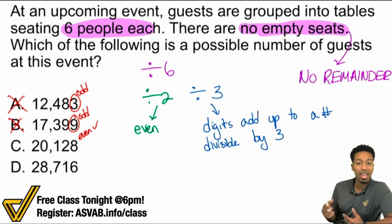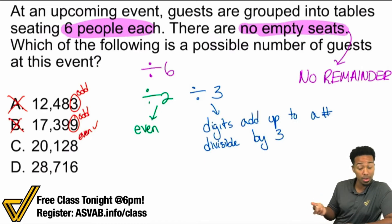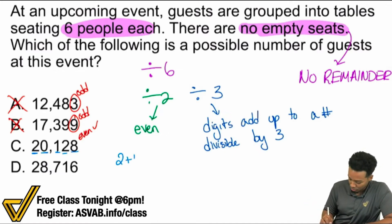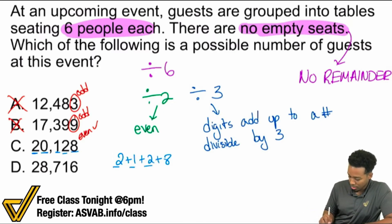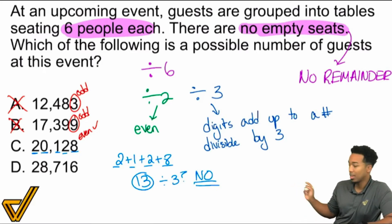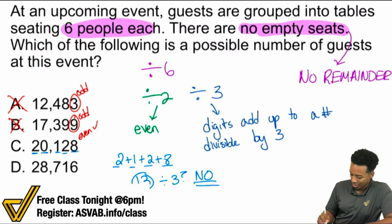But what happens when we add up those digits? Is that divisible by three? So we have two, one, two, eight — we also have a zero, but adding zero does nothing. So two plus one plus two plus eight — add those together, we get 13. Is 13 divisible by three? Nope. 13 is not divisible by three, and so C is incorrect.